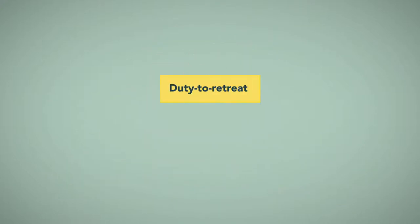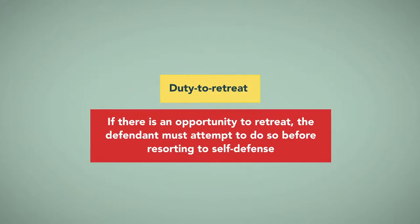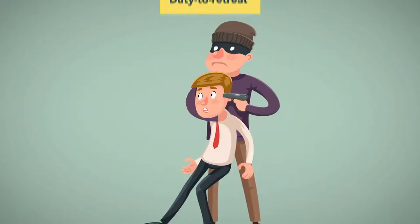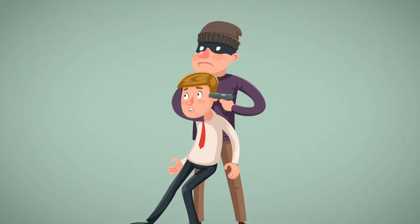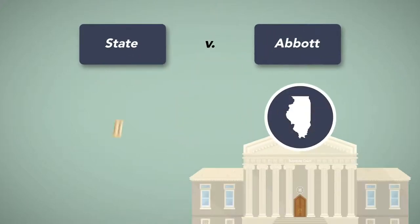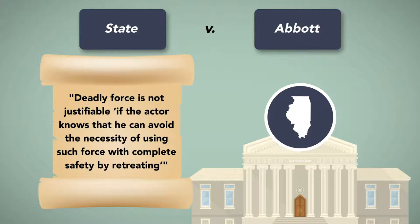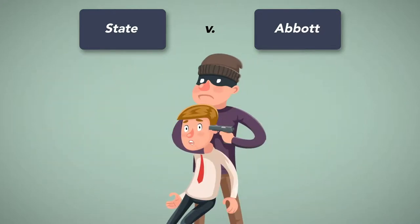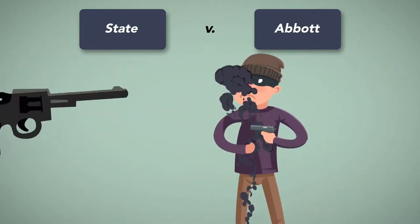The duty to retreat states that if there is an opportunity to retreat, the defendant must attempt to do so before resorting to self-defense. This is typically applied to the use of deadly force. In State v. Abbott, the Supreme Court of New Jersey determined that deadly force is not justifiable if the actor knows that he can avoid the necessity of using such force with complete safety by retreating. Thus, a defendant must prove that he at least tried to retreat before using deadly force.